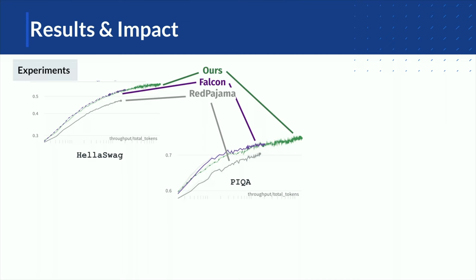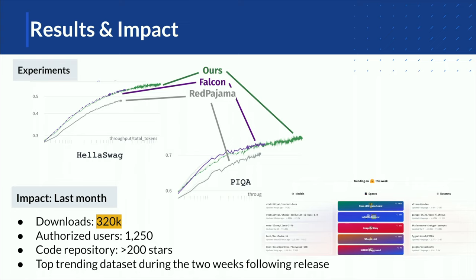In our experiments, we trained one billion parameter pre-training models and compared our data — shown as the green curves — against two other available datasets. Our numbers show higher performance on two datasets, Hela and PICA. This dataset has already been impactful: it has been downloaded 320,000 times in the past month since release, we have about 1,200 authorized users, our code repository has more than 200 stars, and it has been a top-trending dataset in the two weeks after its release on Hugging Face.